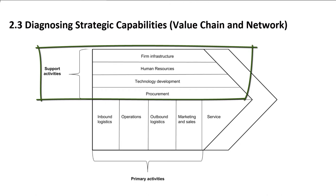There are four main types of support activities. Firstly, procurement. These are processes that occur in many parts of the organization for acquiring the various resource inputs to the primary activities. These can be vitally important for achieving scale advantages.